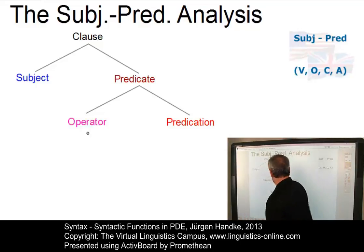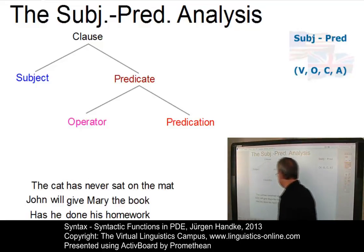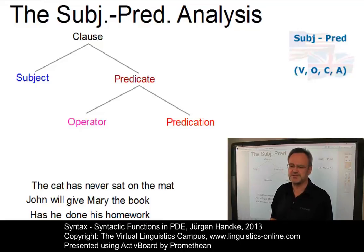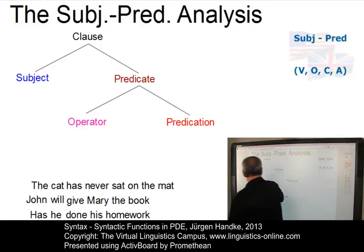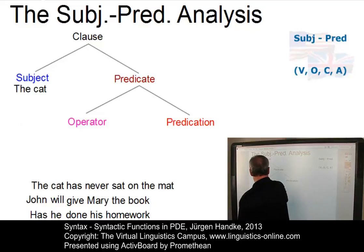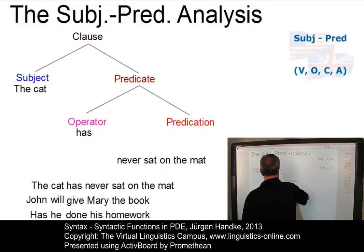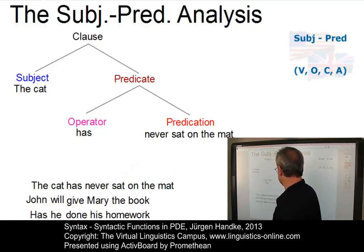Let's look at some examples. The cat has never sat on the mat. Clearly, the cat is the subject, has is the operator, and never sat on the mat is the predication.